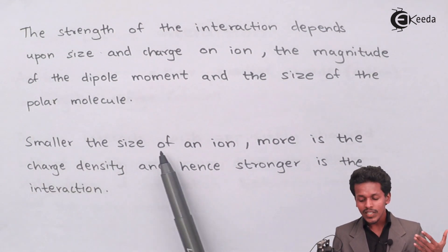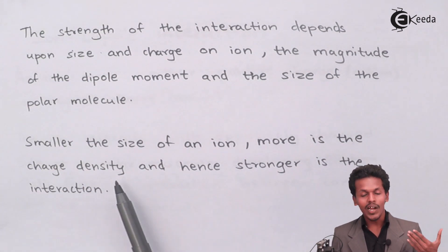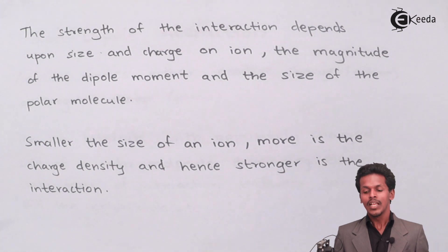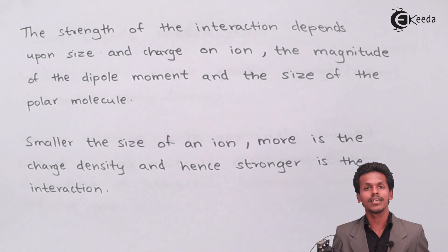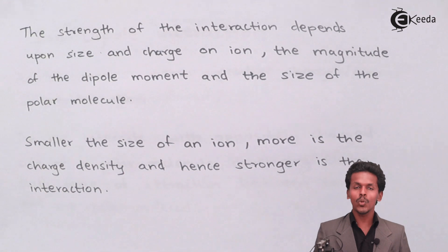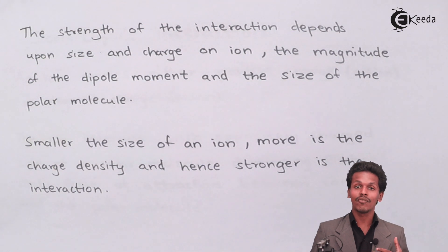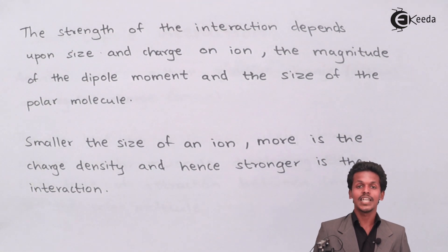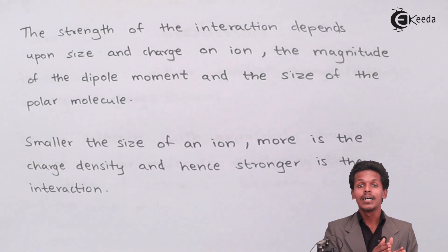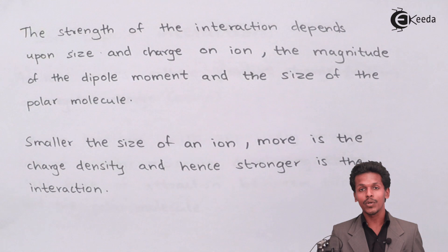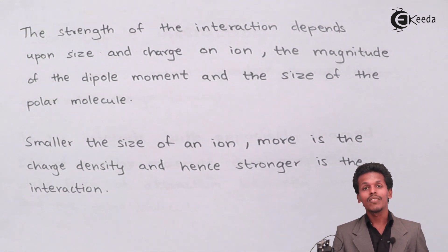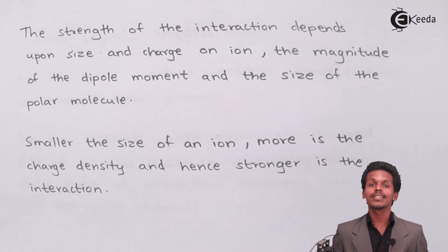Smaller the size of the ion, more is the charge density, and hence stronger is the interaction. If one ion is of smaller size, it will interact more strongly compared to the other. A cation, which usually has a smaller size, will interact with the polar molecule more compared to an anion, which has a larger size and therefore less interaction with the polar molecule.